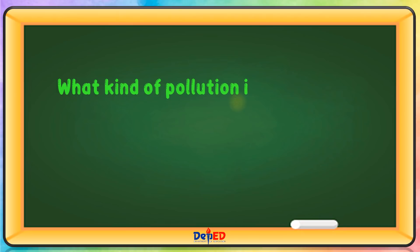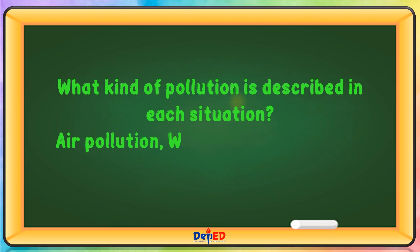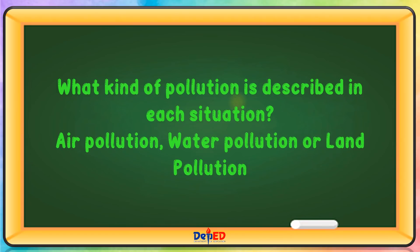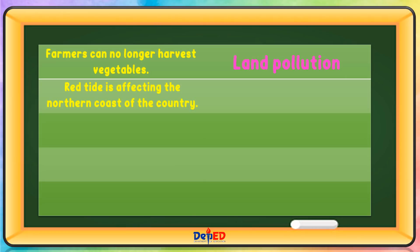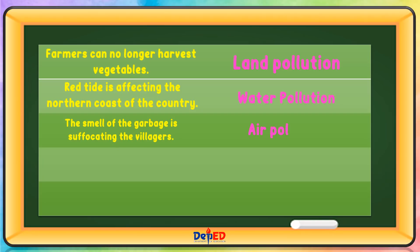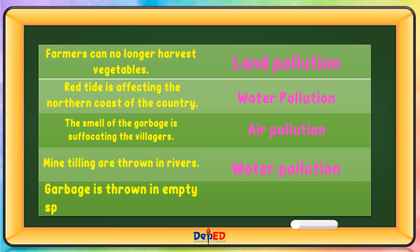What kind of pollution is described in each situation — air pollution, water pollution, or land pollution? Farmers can no longer harvest vegetables — land pollution. Red tide is affecting the northern coast of the country — water pollution. The smell of garbage is suffocating the villagers — air pollution. Mine tailings are thrown in rivers — water pollution. Garbage is thrown in empty spaces in residential areas — land pollution.